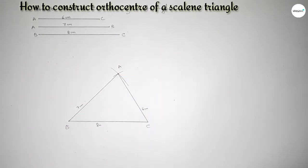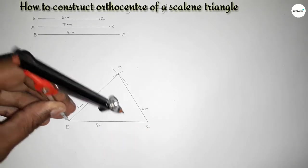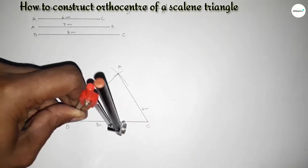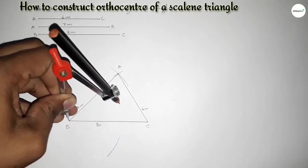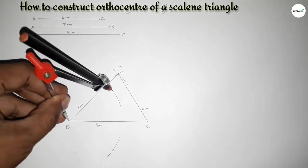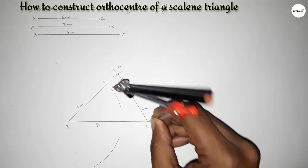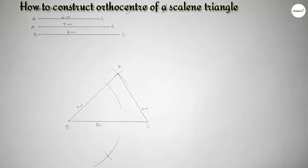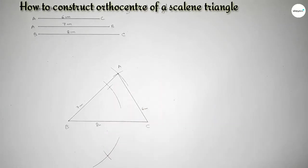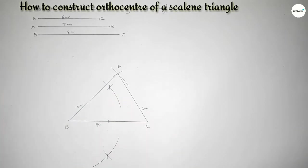Now we have to bisect line BC first. Putting the compass on point B and taking greater than half of BC, drawing an arc. With the same length, putting the compass on point C and cutting arcs above and below. Both curves intersect at two points. Joining these two points gives the perpendicular bisector of BC.